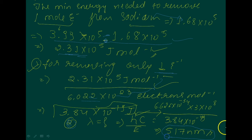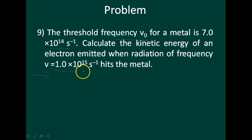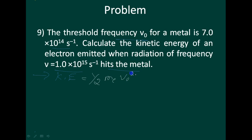The next problem: the threshold frequency v₀ — below which electrons will not be emitted — for a metal is 7.0×10¹⁴ per second. Calculate the kinetic energy of an electron emitted when radiation of frequency v = 1.0×10¹⁵ per second hits the metal. According to Einstein's equation, kinetic energy equals h(v − v₀).